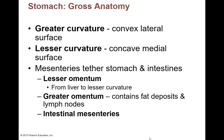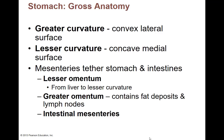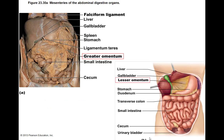The greater omentum is attached to the greater curvature — it's that fat apron hanging off of the stomach. The lesser omentum goes from the lesser curvature of the stomach and attaches up to the liver. That fat apron does provide some protection and some energy source because there is fat there. Together, they keep the stomach in place so it's not jostling around quite as much.